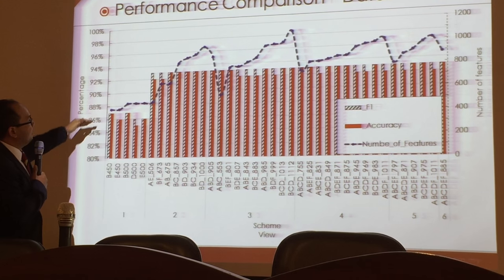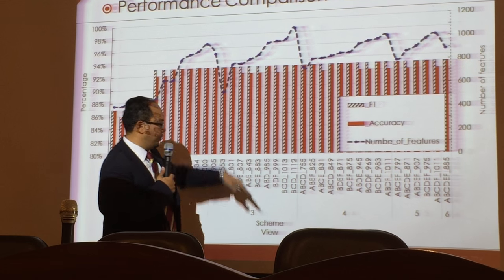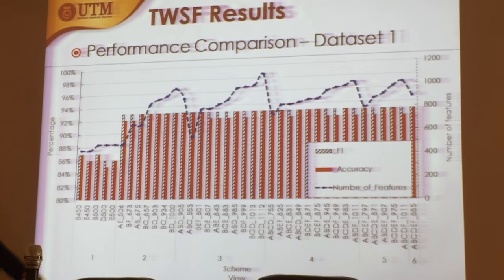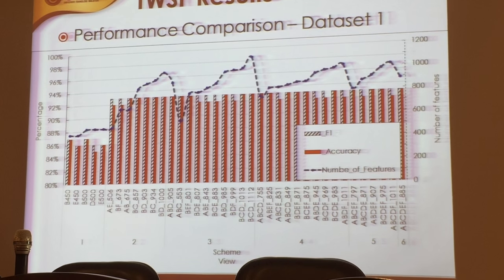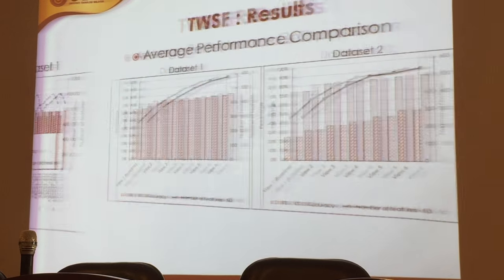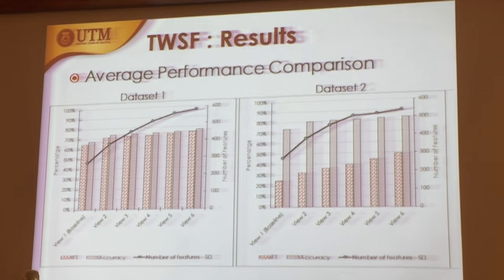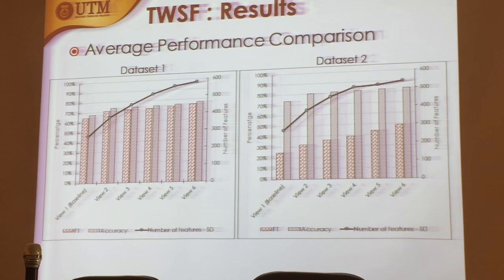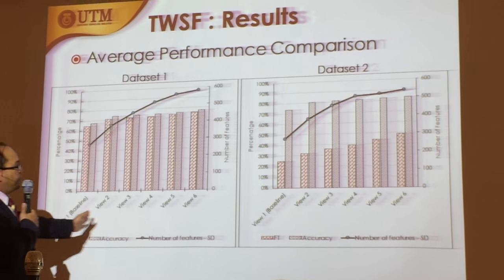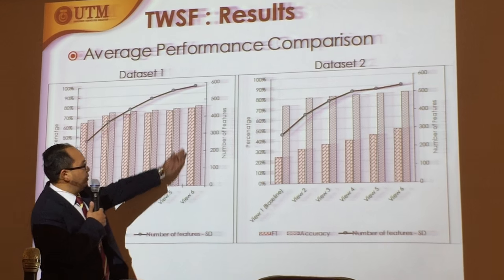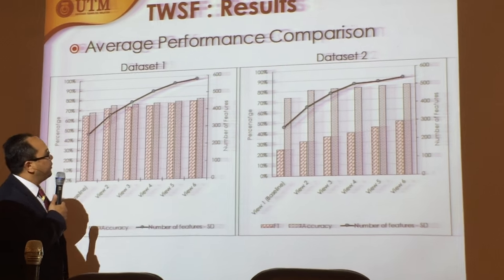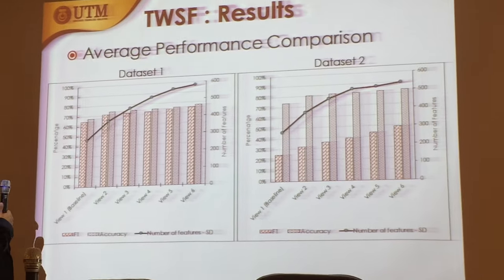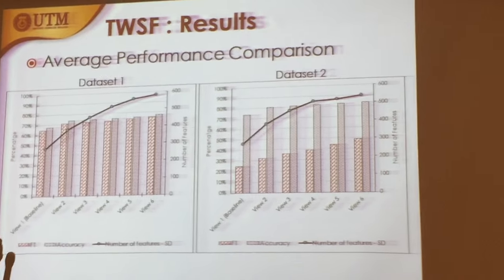The graph goes up and down across the different schema views, reflecting different types of features we created. We also made an average comparison of the results using the first method. With different views combined, the percentage performance increased overall.